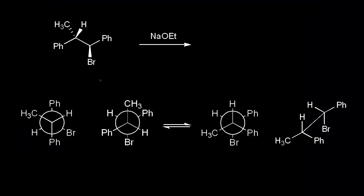Let's do another E2 reaction. Notice how similar it is to the last one — the only difference is the stereochemistry at the beta carbon. Now the hydrogen is coming out at us in space and the methyl group is going away from us. We'll see how changing the stereochemistry affects the stereochemistry of the product. We need to stare down the beta-alpha bond again.